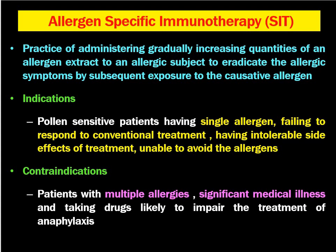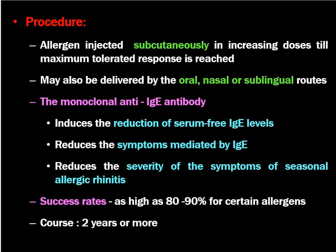When the patient has diabetes, hypertension, and steroids cannot be used, then the patient can be a candidate for specific immunotherapy. When the patient has a certain job that cannot be quitted, the patient has to have specific immunotherapy. Contraindications for immunotherapy are patients with multiple allergies, significant medical illness like diabetes or hypertension, and those taking drugs likely to impair the treatment of anaphylaxis. The procedure is: the allergen is injected subcutaneously in increasing doses until the maximum tolerated dose response is raised. Nowadays, it may also be delivered by oral, nasal, or sublingual routes — this is a new advancement in medical practice.